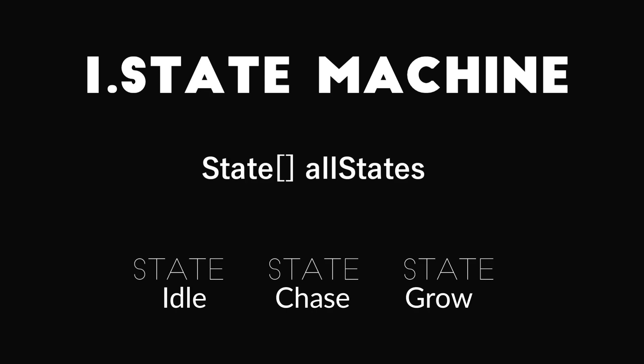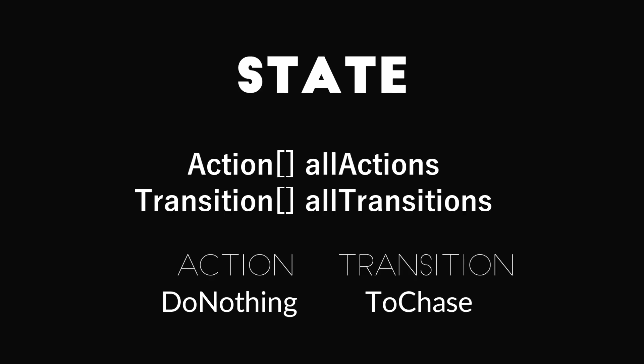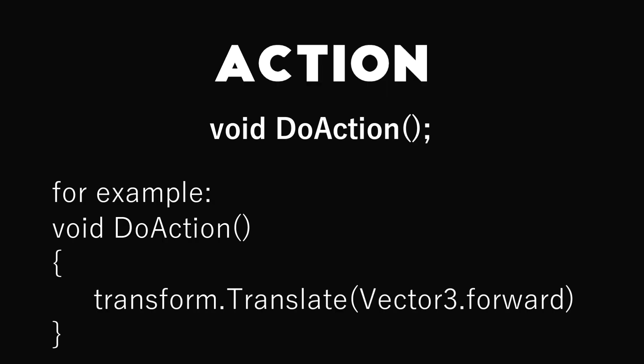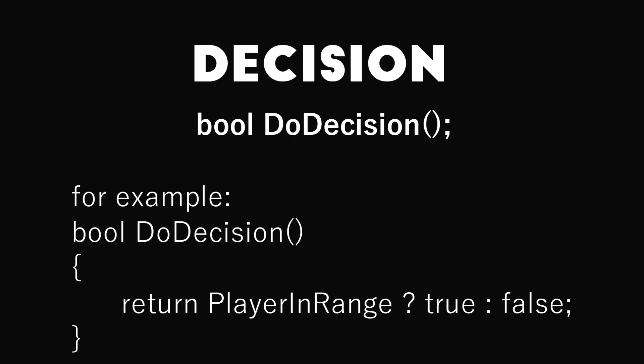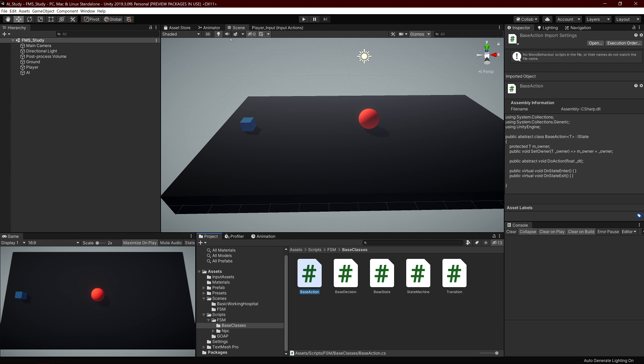Let's do a quick overview of all the scripts. First is StateMachine, which contains all the states the AI can be in. State contains two arrays: one for actions and one for transitions. An action can be 'do nothing' and a transition can be 'go to chase.' Action has one method called DoAction where you write the behavior. Transition contains a Decision class that decides whether to go to the success state or fail state. Decision has one method that returns bool — in this case deciding whether we're in range.